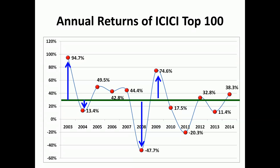Suppose I measure how much each return is above or below the average — those are the blue arrows. Some arrows point up, which is a positive deviation; some arrows point down, which is a negative deviation. Now suppose I calculate the average of these deviations. The blue arrows represent the deviations of each return from the average. Some are positive, some are negative.